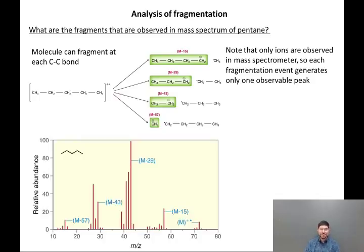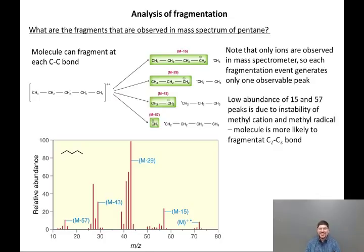Let's look at the spectrum in more detail. The spectrum of pentane has, as we saw, the molecular ion at 72. It has an M-15 peak at 57, an M-29 peak at 43—that's the base peak. It has an M-43 peak at 29, and finally, it has an M-57 peak at 15. What you might notice is, in addition to the molecular ion, the 15 and 57 peaks are also relatively small compared to the 29 and 43 peaks.